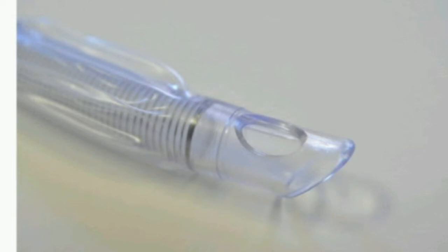The fact that this type of ET tube contains a metal wire coil means there is no need for a radio-opaque line.